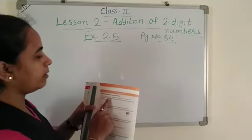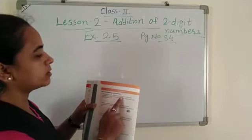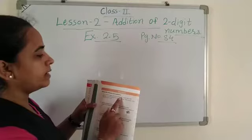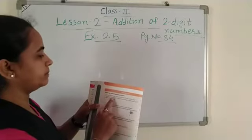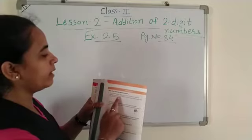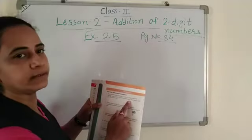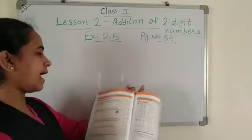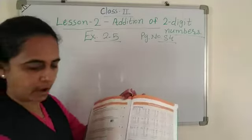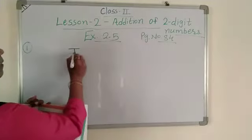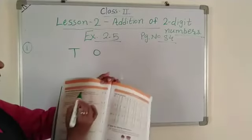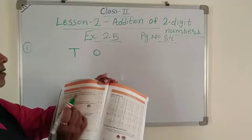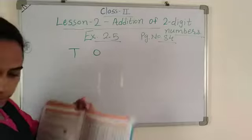Read the first problem. In a cricket match, Ramesh scored 67 runs in the first innings. Underline 67 runs in first innings. And 29 runs in the second innings.